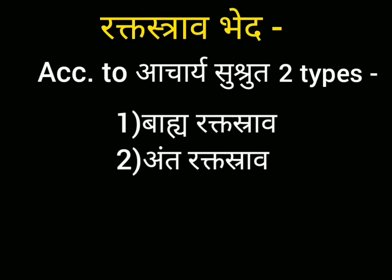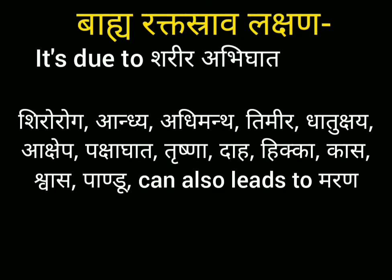Rakta-Srava-Bhedha: According to Acharya Sushruta, there are two types — Bahya Rakta-Srava and Antar-Rakta-Srava. Bahya Rakta-Srava Lakshana: it is due to Shari-Rabhigata, and symptoms include Shiro-Roga, Aandhya, Adhimanth, Timira, Dhatukshaya, Aakshepa, Pakshagata, Trishna, Daha, Hikka, Kasa, Shwasa, Pandu-Roga, and it can also lead to Marana.